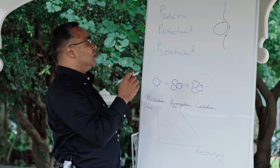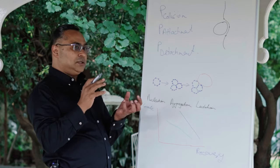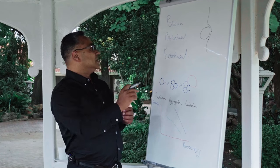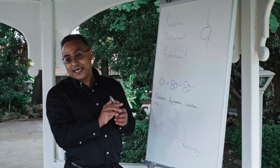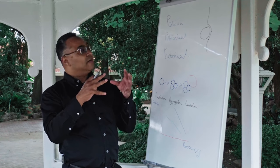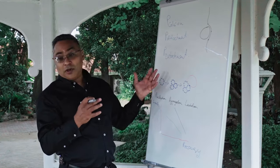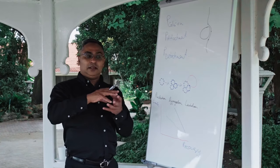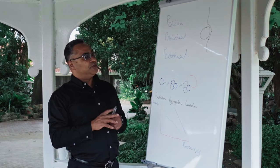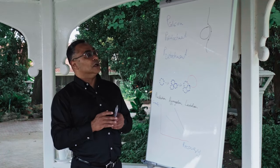The first one is the probability of collision — the probability of the particle that you want to float actually colliding with the bubble. The second is the probability of attachment: after they collide, do they stay stuck together? And then the probability of detachment, which you don't want, is where after they collide they actually move away from each other again, because if that happens the flotation process will not work.